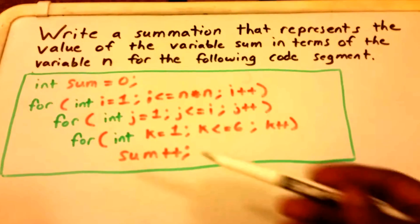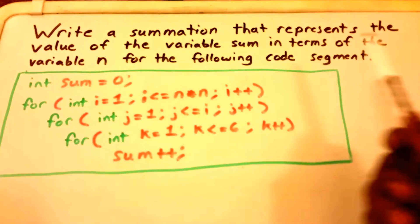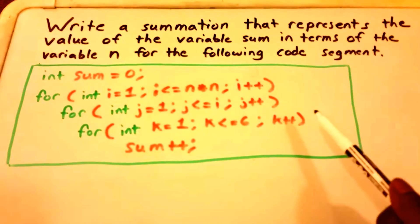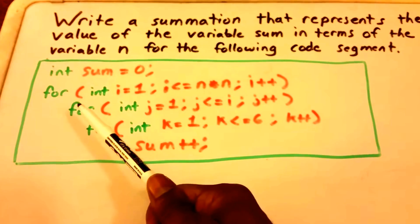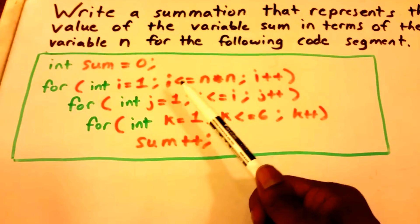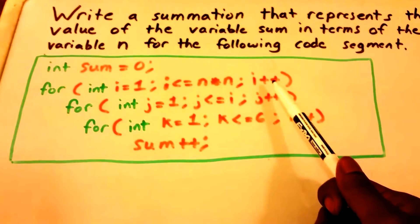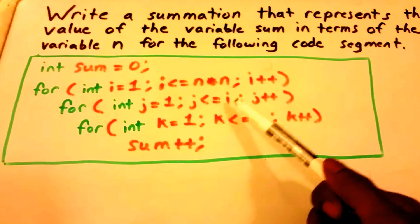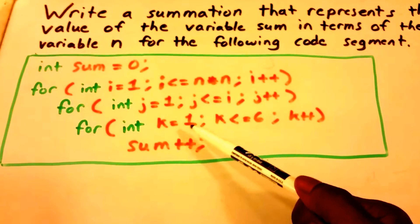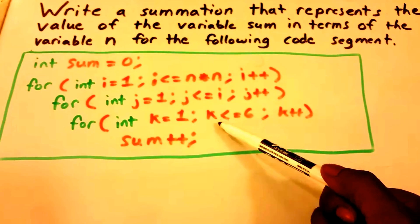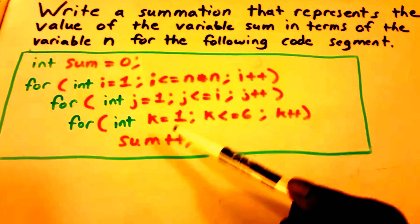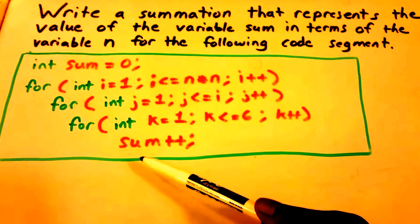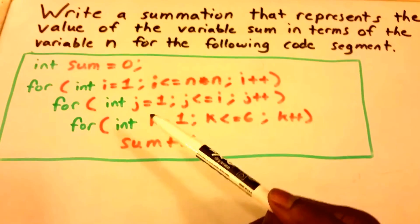Hey guys, welcome to this video. We want to write a summation that represents the value of the variable sum in terms of the variable n for the following code segment. We have sum equals zero, then a first for loop where i equals one, running while i is less than or equal to n times n, incrementing i by one. Within that, a second for loop from j equals one running while j is less than or equal to i, incrementing j by one. Within that, a third for loop from k equals one running while k is less than or equal to six, incrementing k by one. Inside we have sum++, so sum increments by one each time.